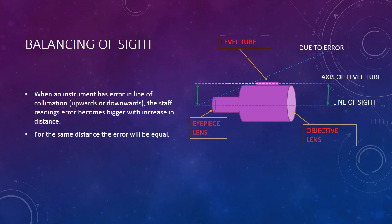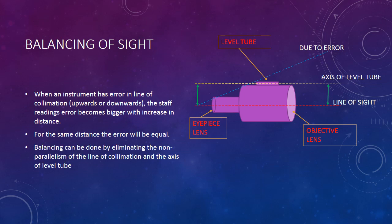For the same distance, the error will be equal. This point is particularly very important: if the distance between the level staff and the level instrument is equal for several points, then the amount of error will also be equal. Balancing can be done by eliminating the non-parallelism of the line of collimation and the axis of the level tube.